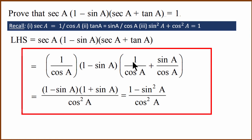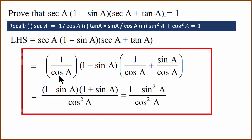In the numerator, we are left with 1 plus sin A, because cos A is common and factors out. We then have to multiply that with (1 minus sin A). So the numerator becomes (1 minus sin A) multiplied by (1 plus sin A), all over cos squared A.